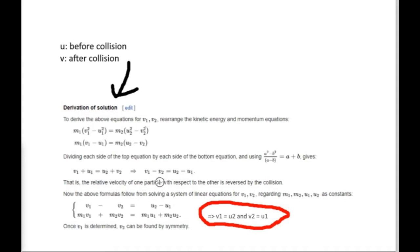These two expressions show the difference in the velocities of the two objects, which is also called relative velocity — how fast one object is moving relative to the other. The equation tells me that the relative velocity of one particle with respect to the other is reversed by the collision. Combining this with the conservation of momentum and without masses, the final result is V1 equals U2 and V2 equals U1: the two objects' velocities swap after an elastic collision in the one-dimensional case.